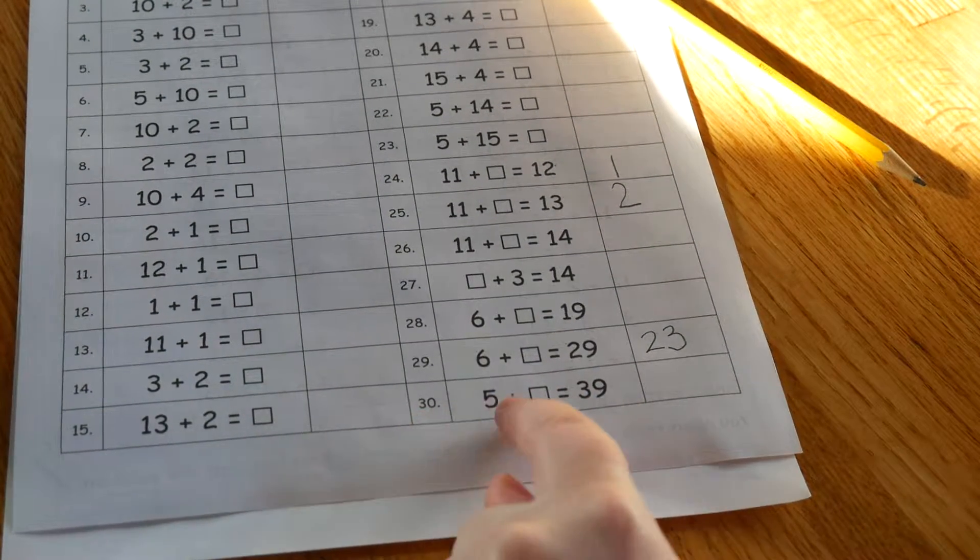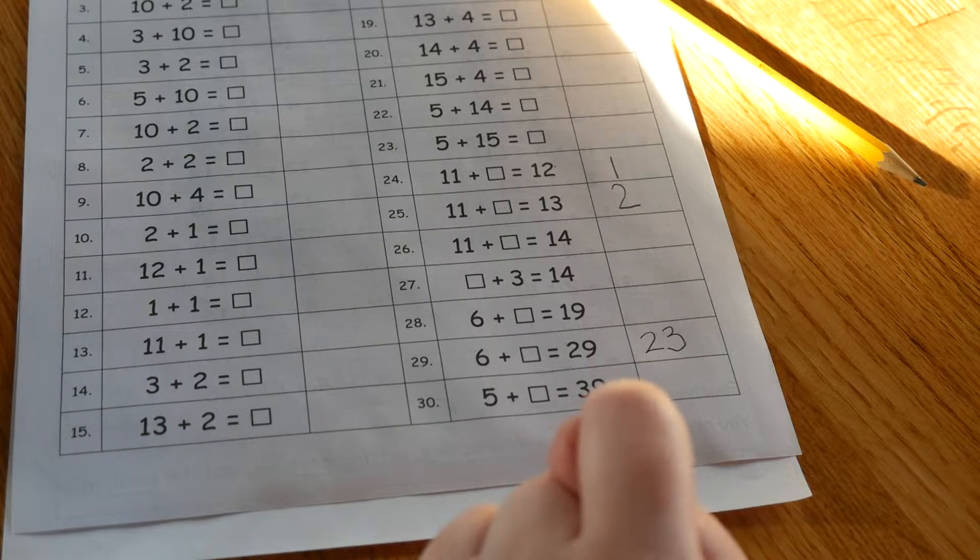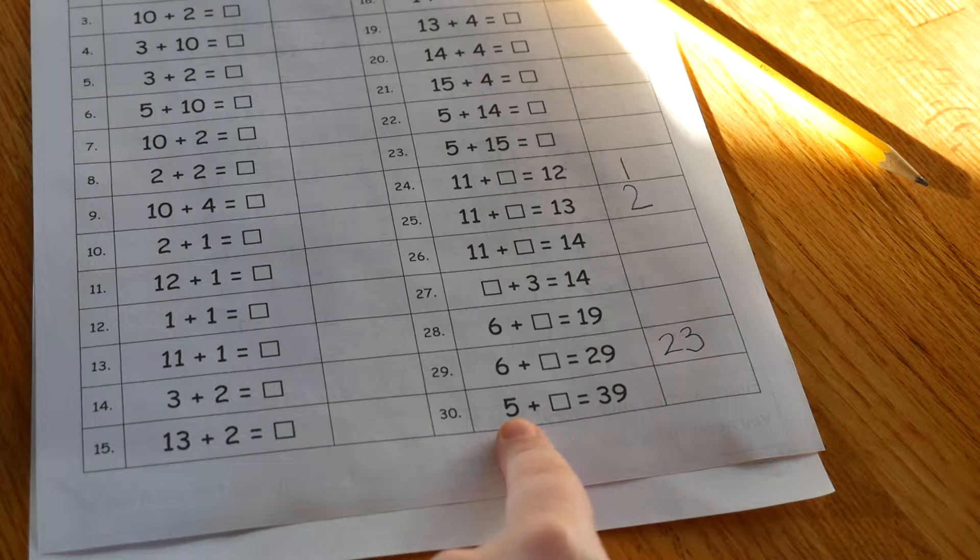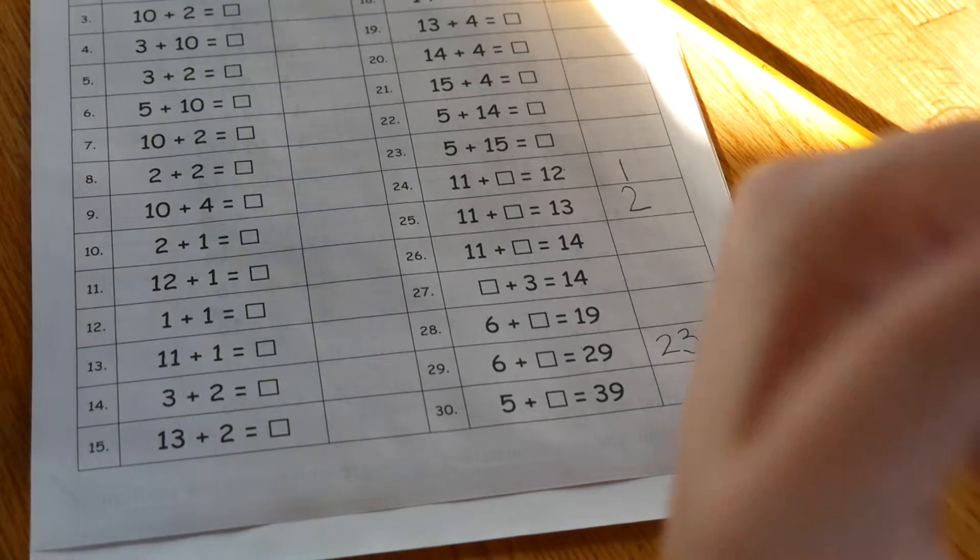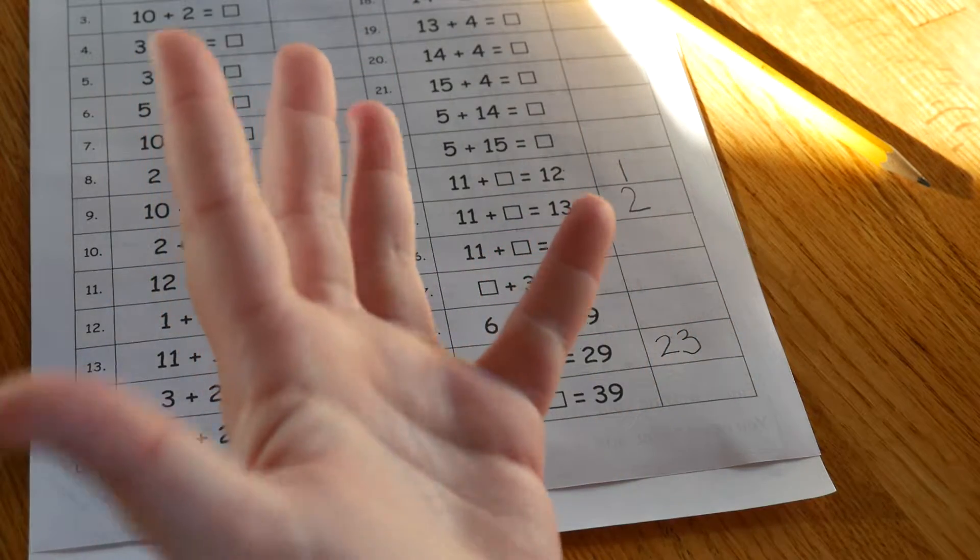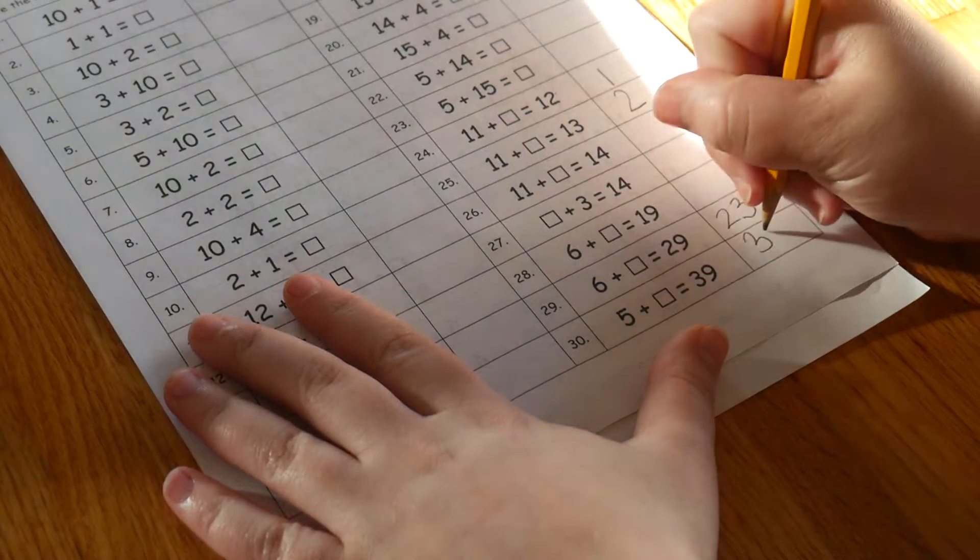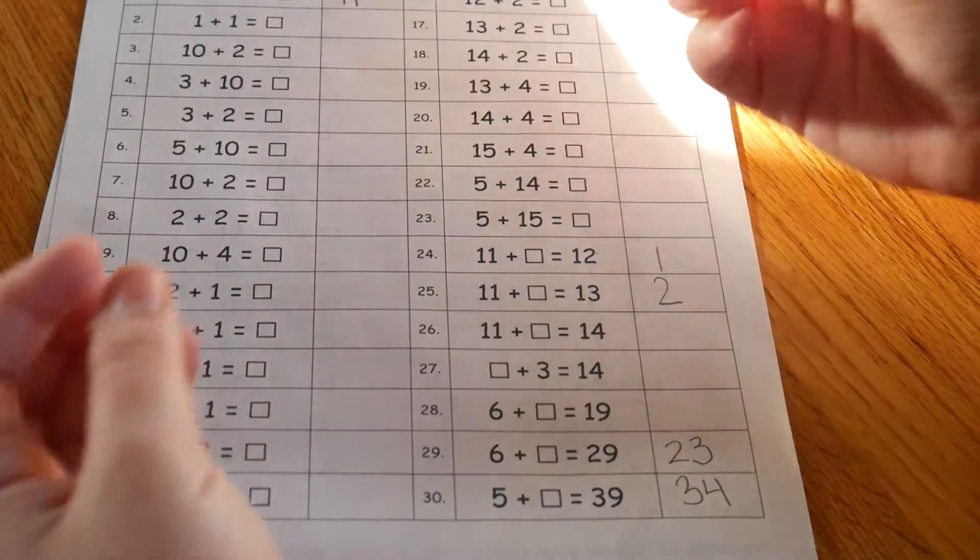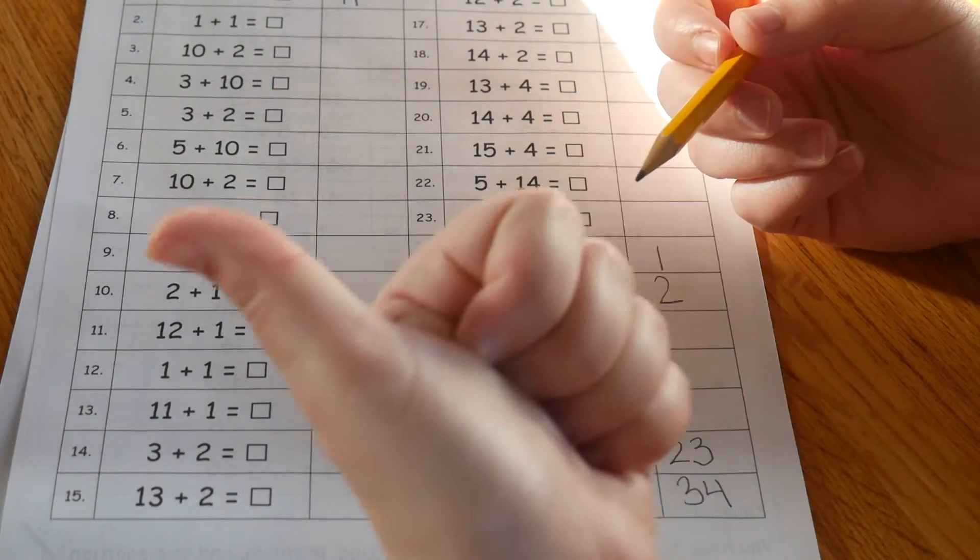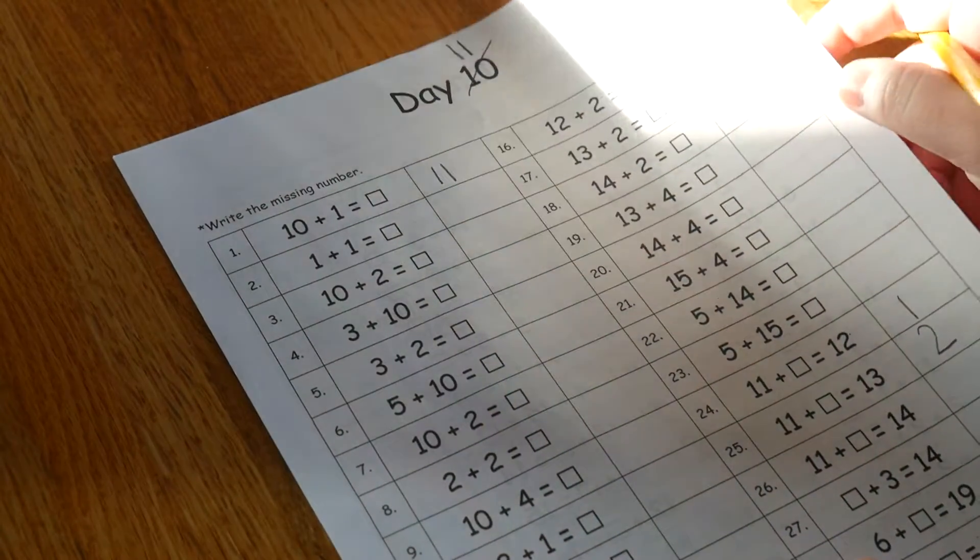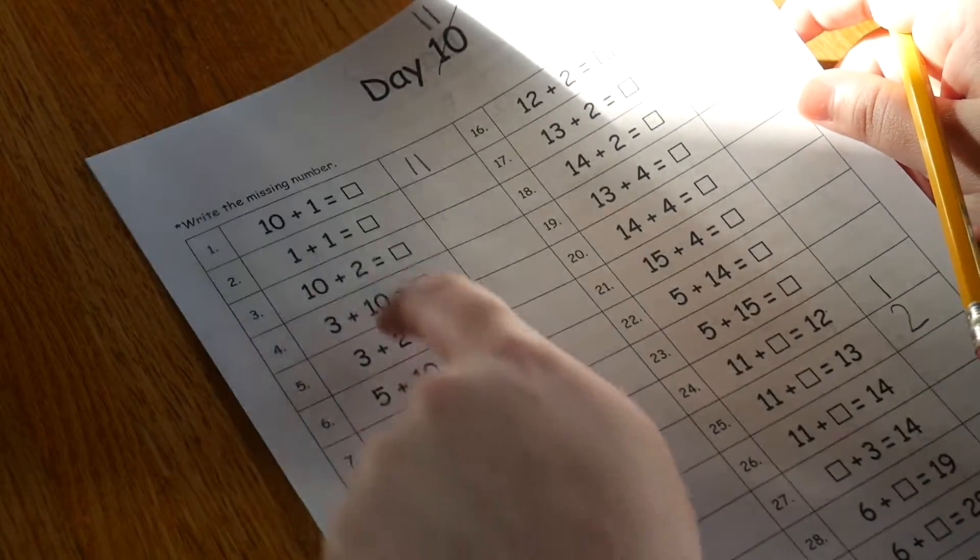I'll do the same thing for this last problem: 5 plus blank equals 39. I'll start at 39 and count down 5: 39, 38, 37, 36, 35, 34. Now I'll check by adding 5 and 34 together: 34, 35, 36, 37, 38, 39. So our math is just addition today—all the problems are addition.